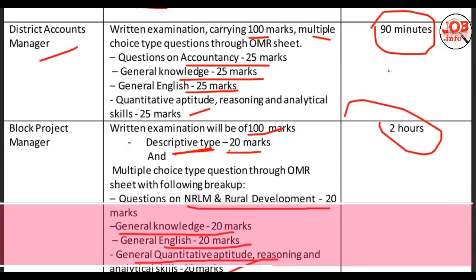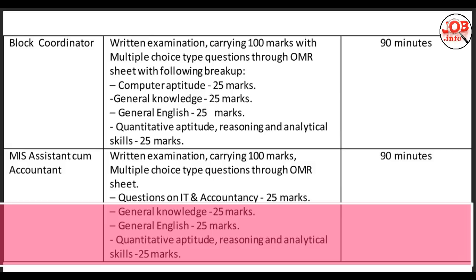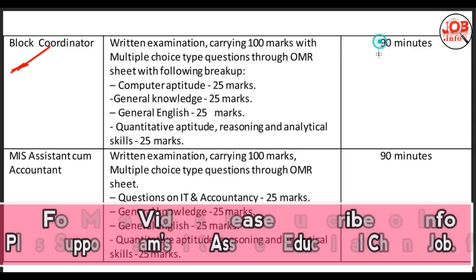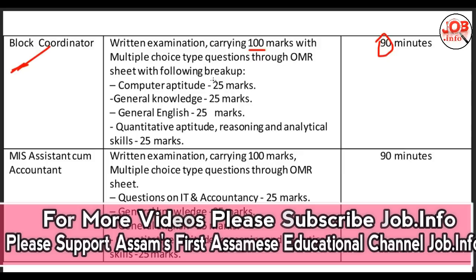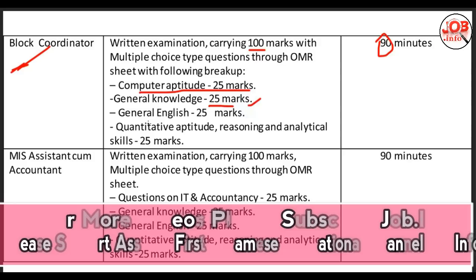Block Coordinator: the exam is 100 marks, 90 minutes. There are no descriptive type questions — only multiple choice questions. The subject-specific section is 25 marks. General Knowledge is 25 marks. General English is 25 marks. Quantitative Aptitude, Reasoning and Analytical Skill is 25 marks. Total is 100 marks. This part also covers Old Question Paper Analysis for General Knowledge.